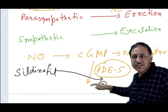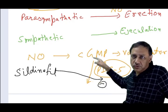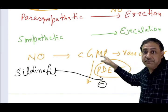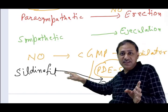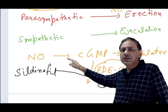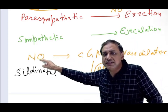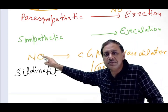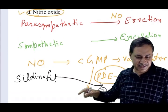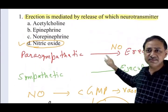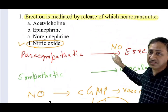So cyclic GMP will not be broken down. So cyclic GMP will get more time to do the erection. So Sildenafil is used to achieve erection. So this is the new pathway which has been discovered. Neurotransmitter is nitric oxide. And nitric oxide will mediate the erection. So answer here is nitric oxide. It is not acetylcholine.